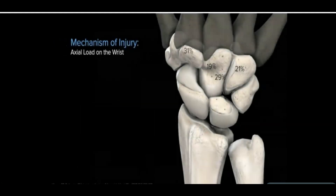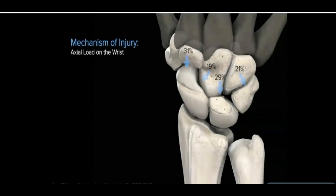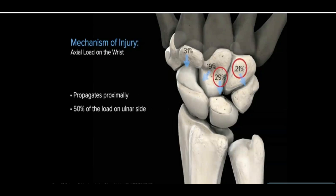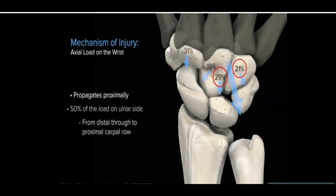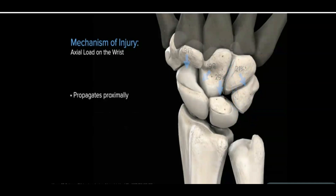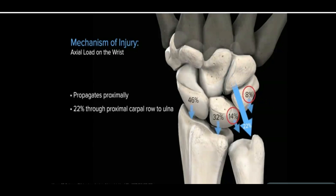When an axial load is applied on the wrist, the load propagates proximally with 50% towards the ulnar side from the distal through the proximal carpal row. As the load moves further proximal through the lunate and the triquetrum, about 22% of it is displaced towards the ulna.